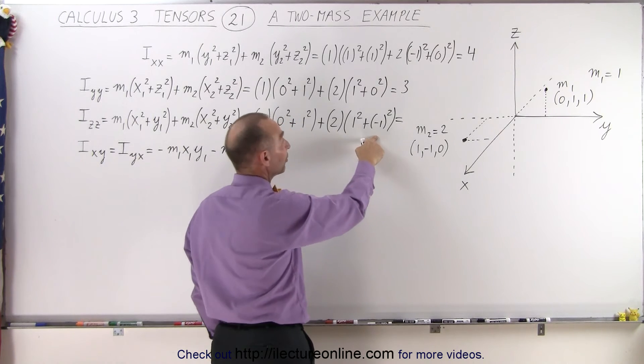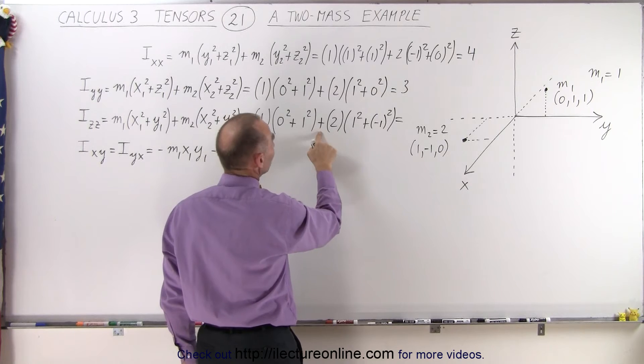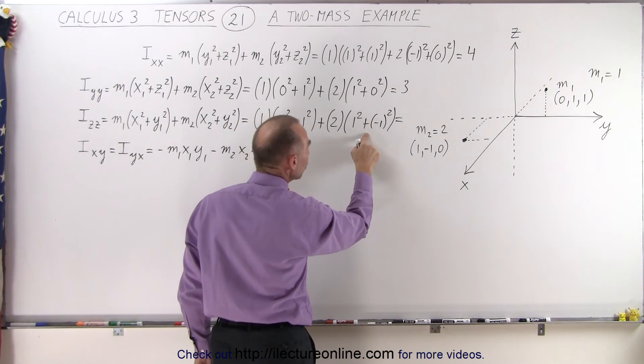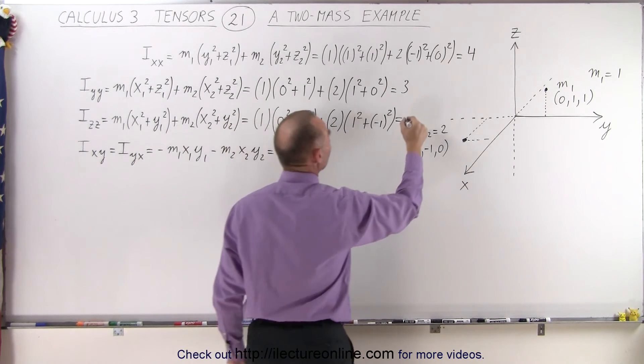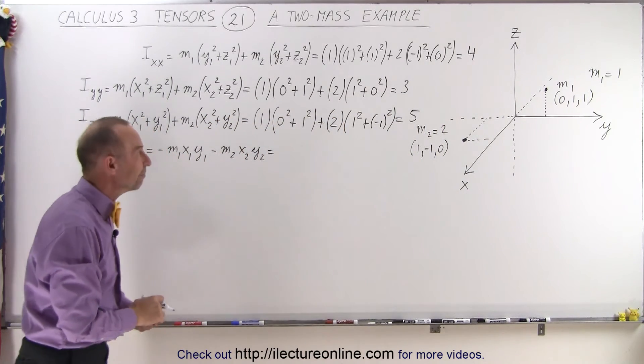Kitty! That's a noisy kitty, isn't it? All right. Again, here we have 1 times 1 is 1 plus 2 times 2, that's 4. 1 plus 4 is 5. So there's the three diagonal elements: 4, 3, and 5.